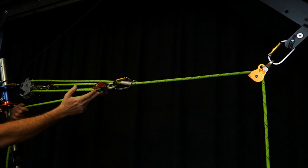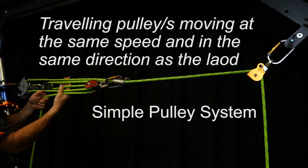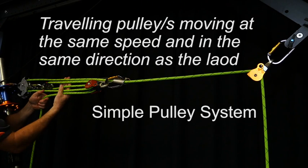So is it still simple? We have two travelling sheaves there, two travelling pulleys. And they are going to be moving at the same speed and in the same direction as the load. And we have five parts of rope now supporting our load. So we now have a simple five to one.